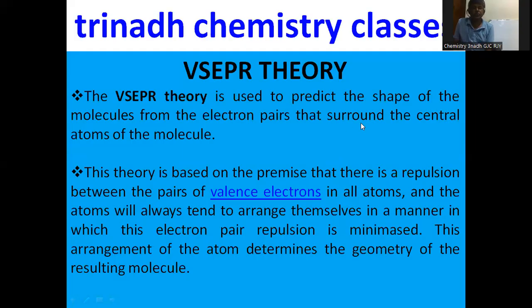This VSEPR theory is used to predict the shapes of molecules from the electron pairs that surround the central atom of the molecule. This theory is based on the premise that there is repulsion between the pairs of valency electrons in all atoms, and the atoms will always tend to arrange themselves in a manner in which the electron pair repulsion is minimized. This arrangement of atoms determines the geometry of the resulting molecule.